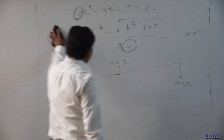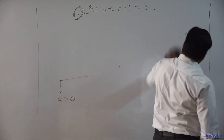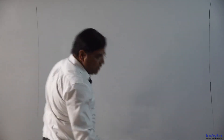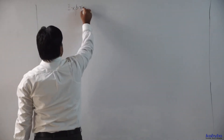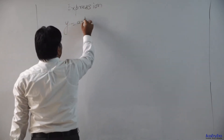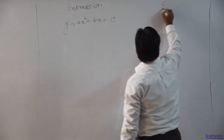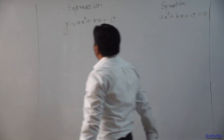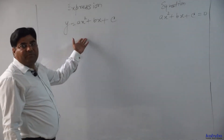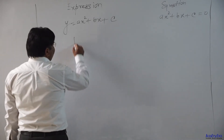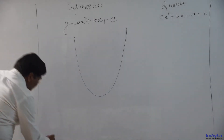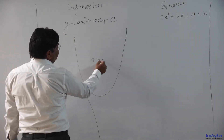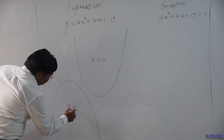Now, considering the quadratic equation and quadratic expression Y = Ax² + Bx + C = 0, whenever we draw the graph of this quadratic expression, the graph will be a parabola. When A is greater than 0, the graph is a vertically upward parabola. When A is less than 0, the graph is a vertically downward parabola.